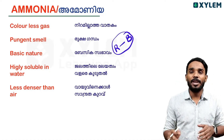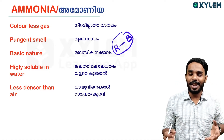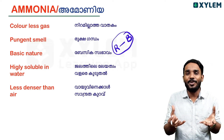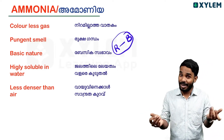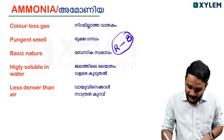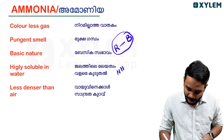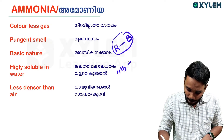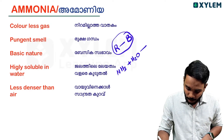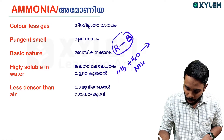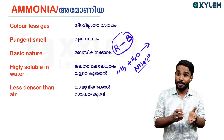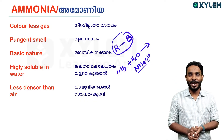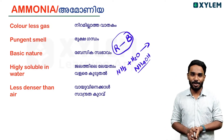Ammonia is highly soluble in water. When ammonia dissolves in water, it forms a solution. Ammonia plus water gives ammonium hydroxide, NH4OH. Ammonia plus water gives ammonium hydroxide, NH4OH.